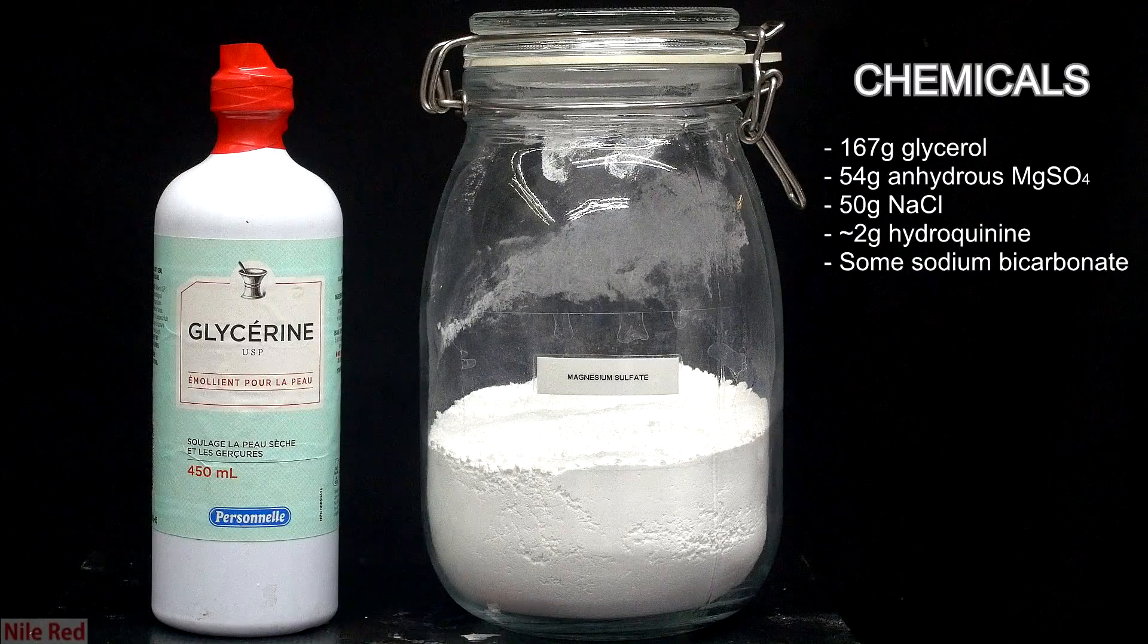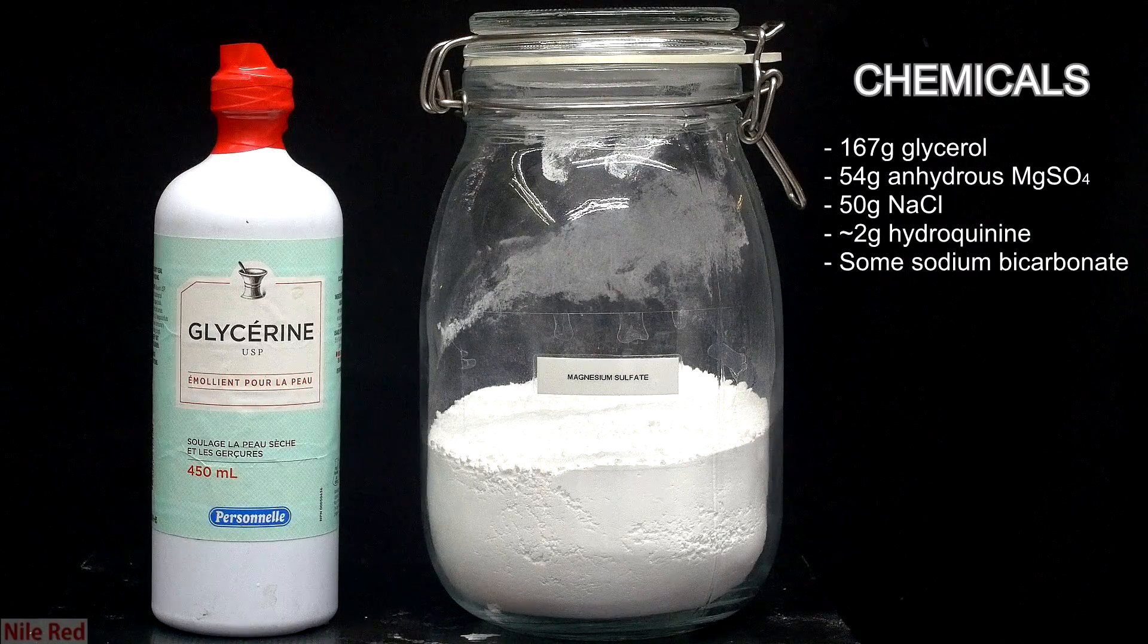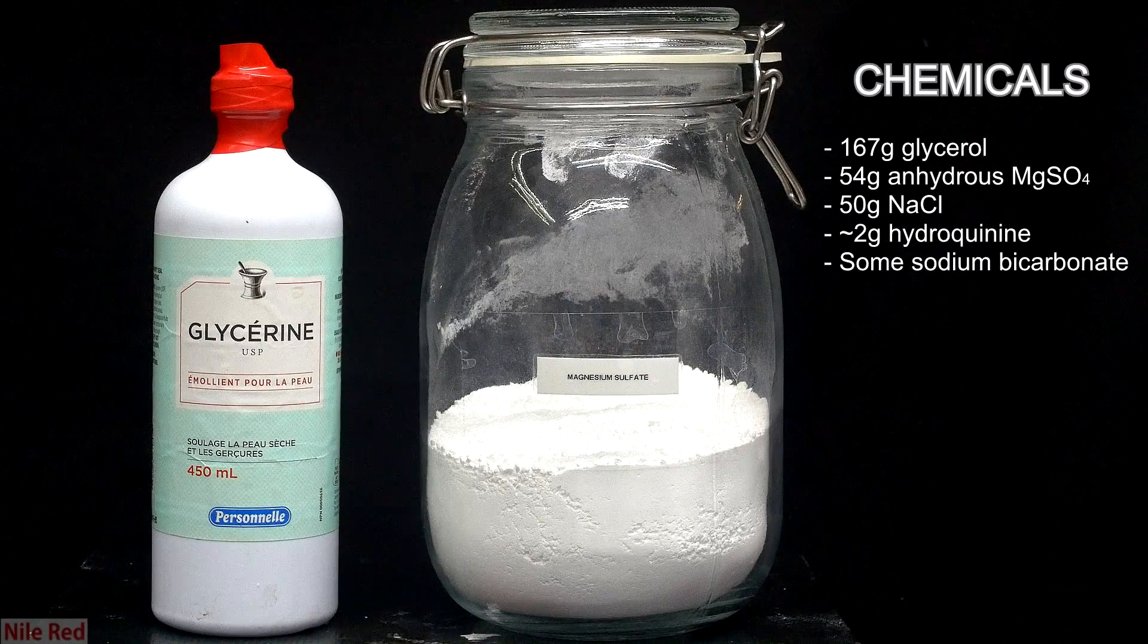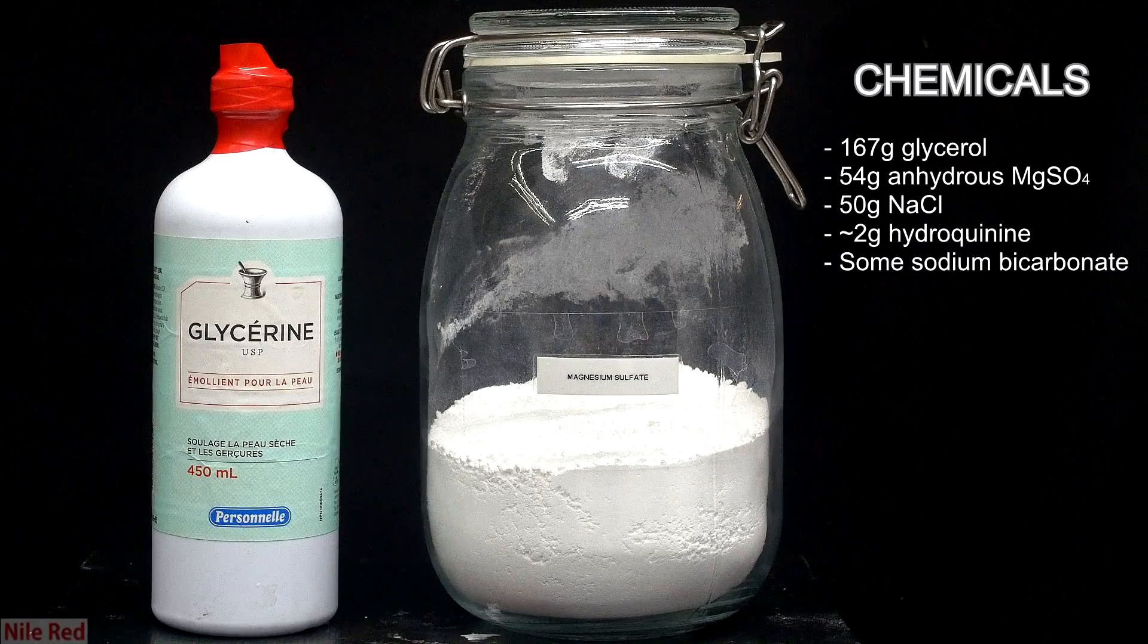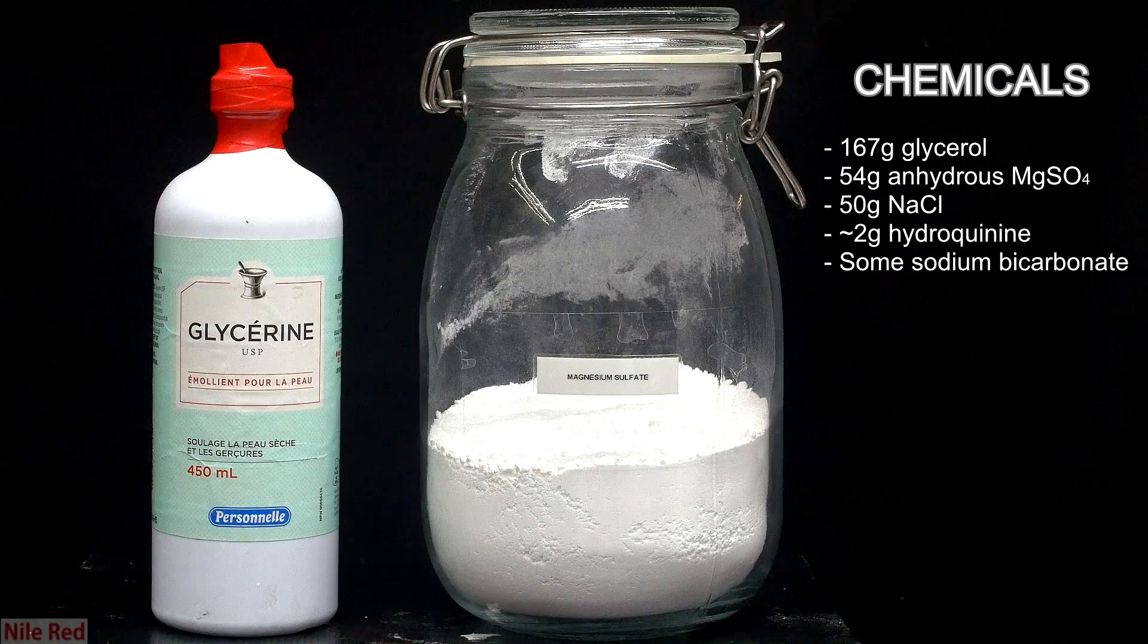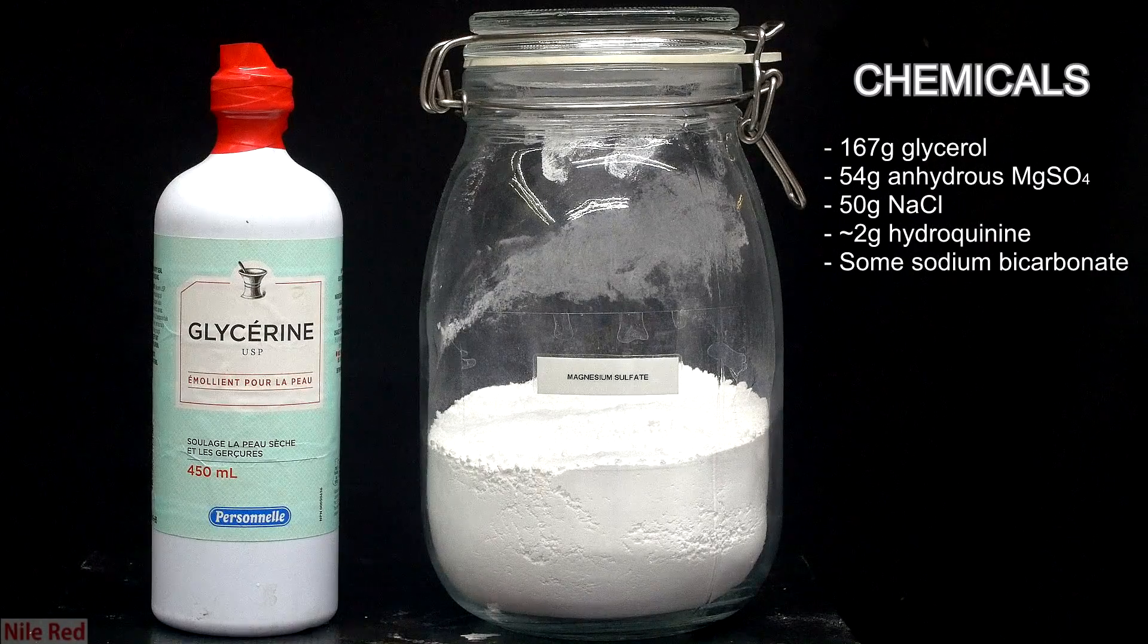Both the glycerol and the magnesium sulfate can be bought from the pharmacy, except the magnesium sulfate has to be dried first in the oven. I actually prepared glycerol myself in a previous video, and I also dried Epsom salt, so if you're interested in seeing either of these, I'll provide links to them in the description.